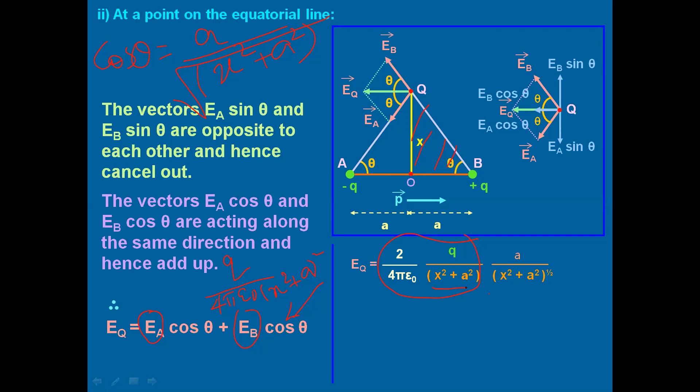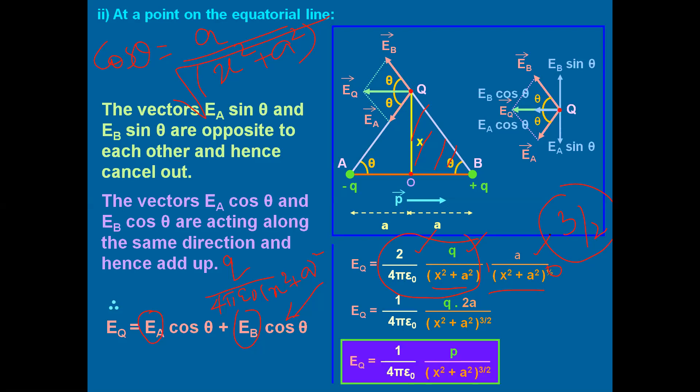In the denominator, we have (x² + a²) with power 1 and (x² + a²) with power 1/2. Adding the powers: 1 + 1/2 = 3/2, so the denominator becomes (x² + a²)^(3/2). Also, 2 × q × a = p (the dipole moment), so the equation for electric field becomes: Eq = (1/4πε₀) · p / (x² + a²)^(3/2).